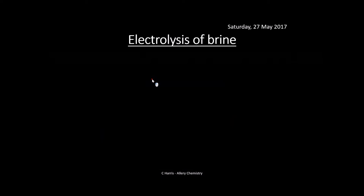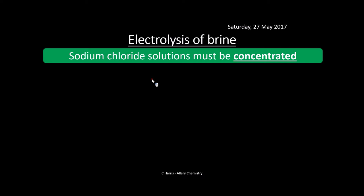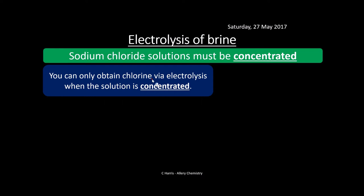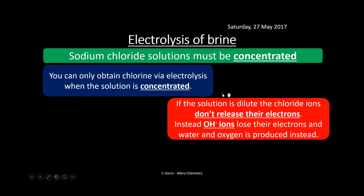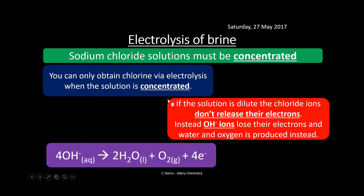Sodium chloride solutions must be concentrated — this is really important. We can only obtain chlorine via electrolysis when the solution is concentrated. If dilute, the chloride ions don't release their electrons; instead OH⁻ ions lose their electrons and water and oxygen are produced. The bubbles produced will be oxygen, not chlorine. The reaction showing this is: 4OH⁻ → 2H₂O + O₂ + 4e⁻, so it's OH⁻ releasing electrons rather than chloride ions.